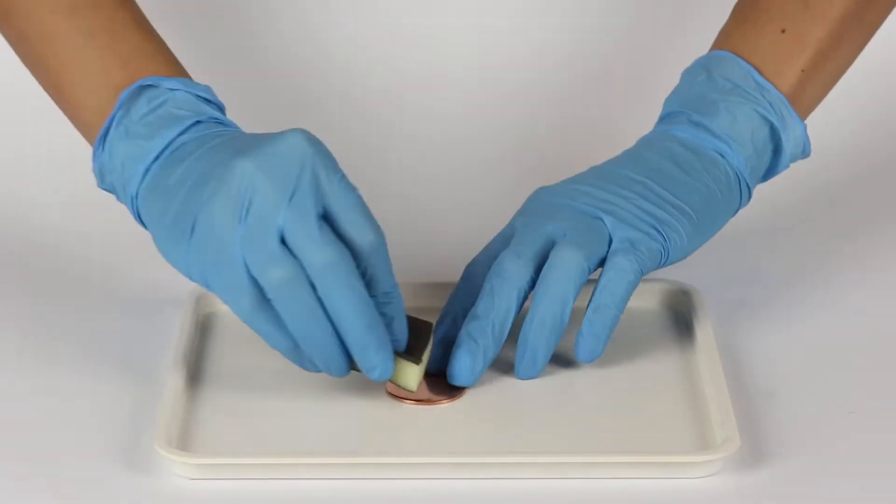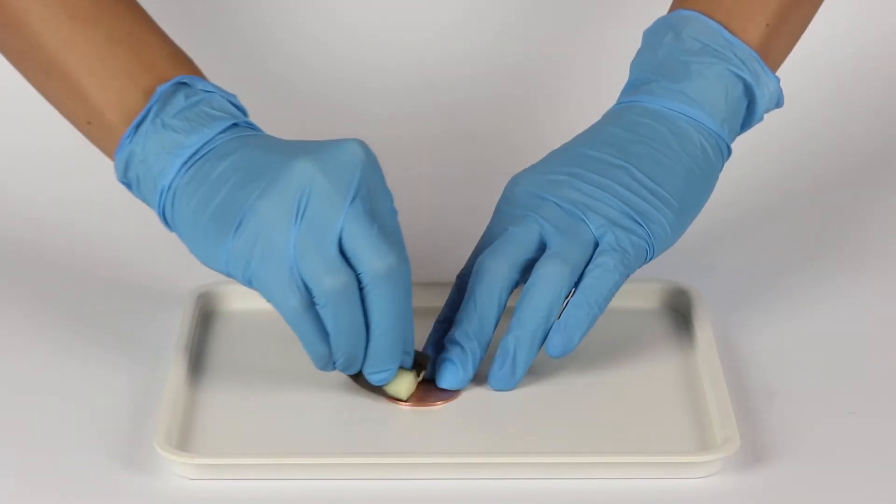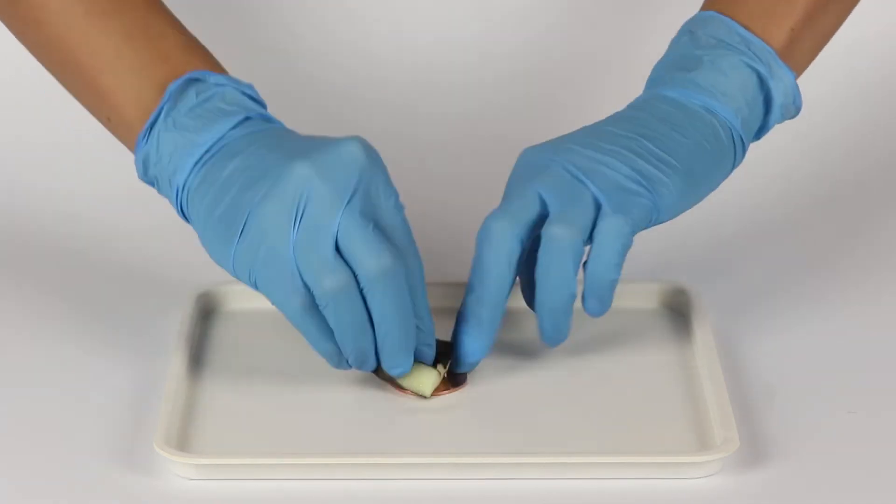Rub the surface of the copper disc with the abrasive sponge to remove any impurities, which may prevent electroplating.